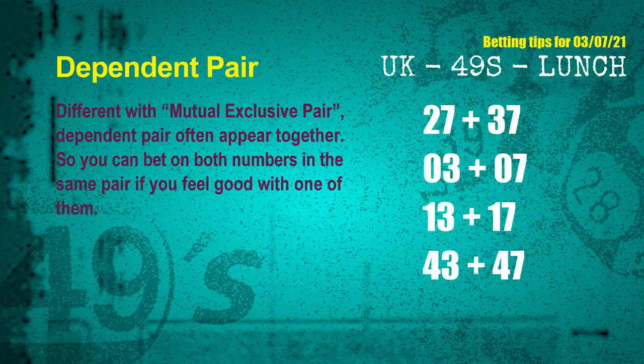Some numbers are mutually exclusive, some are dependent. Numbers in the same dependent pair can both be bet on, because they are often drawn in one draw. The dependent pairs for the next draw are: first pair, 27 and 37; second pair, 03 and 07; third pair, 13 and 17; fourth pair, 43 and 47.